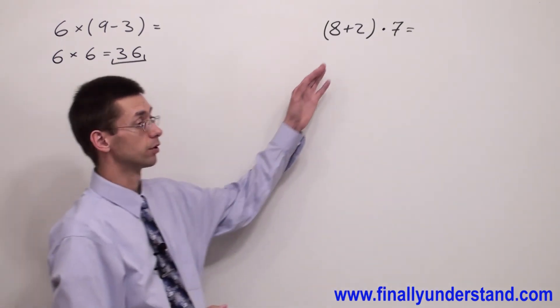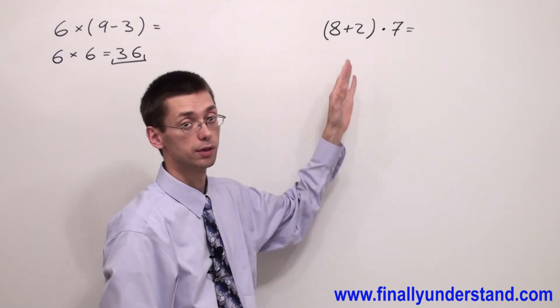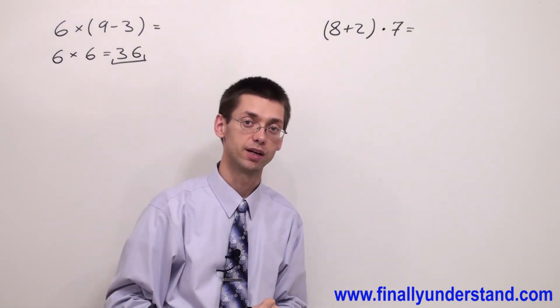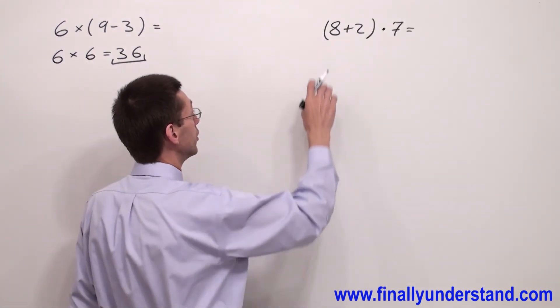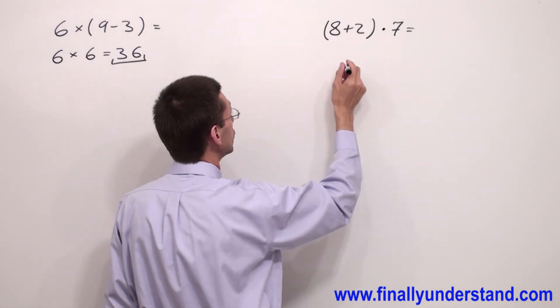We have another example and again we have parentheses. We're supposed to perform the operation inside of the parentheses first. I have 8 plus 2. 8 plus 2 is equal to 10.